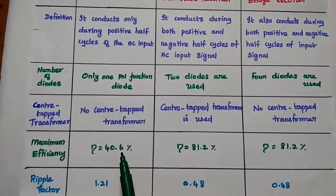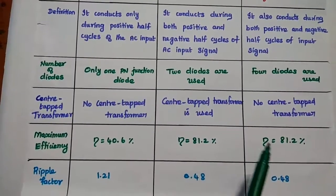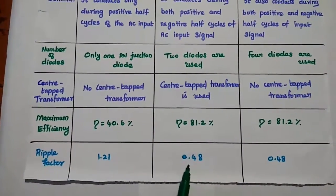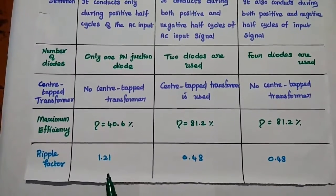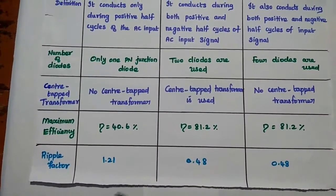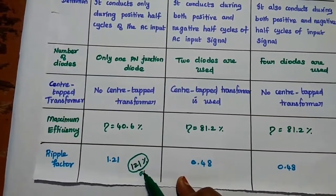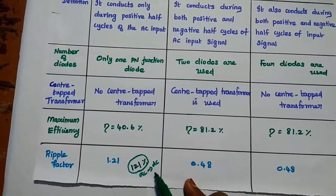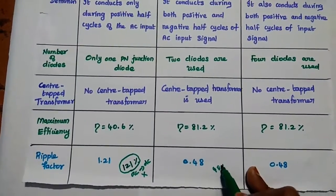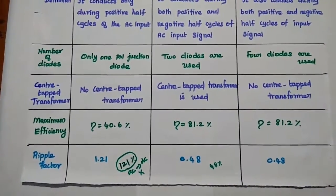The efficiency of the half wave rectifier is only 40.6%, while the full wave rectifier and bridge rectifier both have an efficiency of 81.2%. Regarding the ripple factor — the unwanted AC component present in the DC output — the half wave rectifier has a very high value of 1.21, meaning 121% AC component is present in the DC output, making it impractical. The full wave rectifier and bridge rectifier both have only 48% AC component in the output.